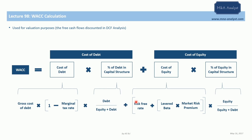We have the beta number, which is simply the covariance between the company's stock return and the market return. It reflects the company-specific risk — in other words, how much a company's stock is affected by movements of the market. A beta equal to one means the company has lower systematic risk than the market, because it will reduce the market risk premium when you multiply by a figure lower than one.